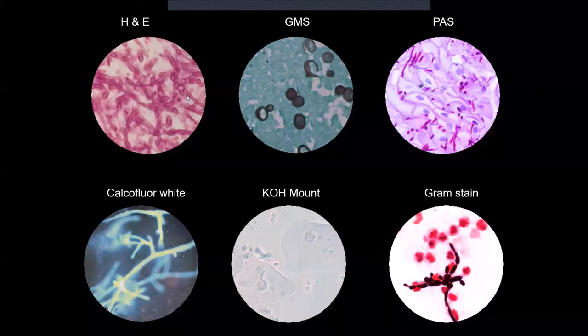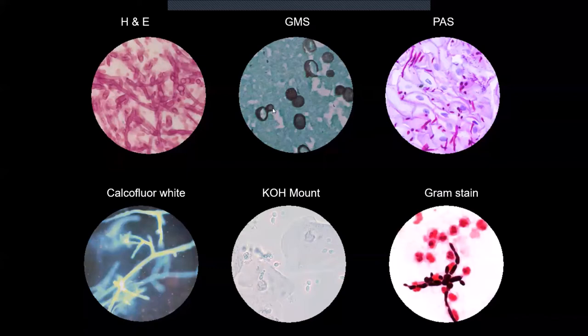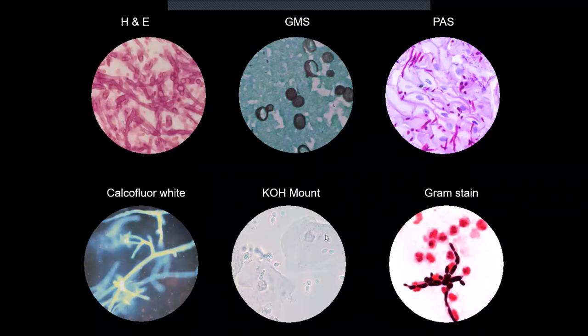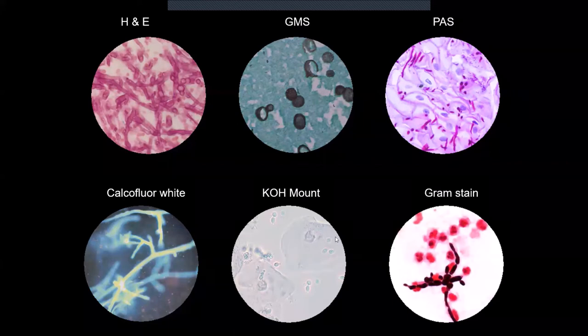Here is a tissue section stained by H&E — fungal elements appear black with visible budding. This is Periodic Acid Schiff stain, where fungal elements appear purple. This is calcofluorite — a fluorescent dye that preferentially binds to fungal elements making them appear bright. This is a KOH mount — an unstained preparation showing epithelial cells and yeast-like budding cells. And this is gram staining of Candida — gram-positive yeast with long pseudohyphae.